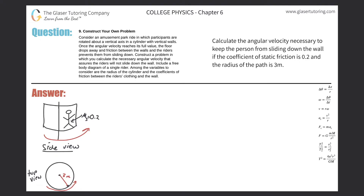Number nine: construct your own problem. Consider an amusement park ride in which participants are rotated about a vertical axis in a cylinder with vertical walls. Once the angular velocity reaches its full value, the floor drops away and friction between the walls and the riders prevents them from sliding down. Construct a problem in which you calculate the necessary angular velocity that assures the riders will not slide down the wall. Include a free body diagram of a single rider. Among the variables to consider are the radius of the cylinder and the coefficients of friction between the riders' clothing and the wall.